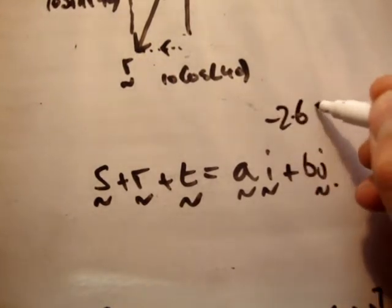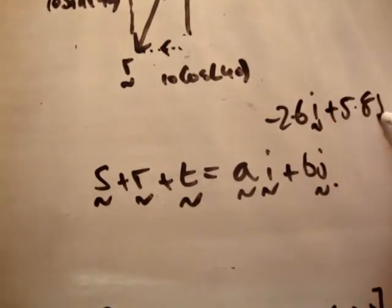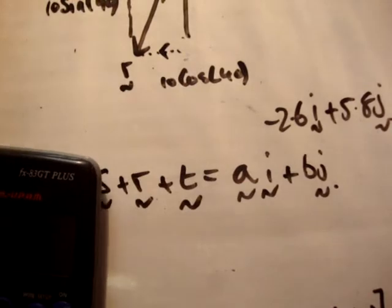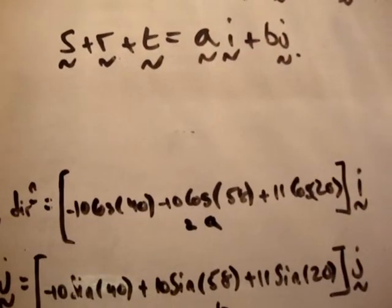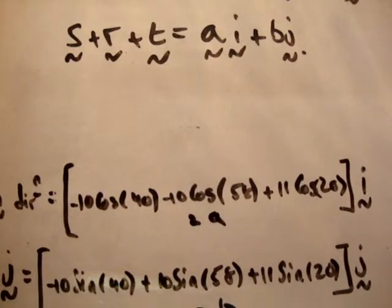So I'm just going to check to see if the book actually worked this out itself. So yeah, there's minus 2.6 i and 5.8 j. I'm just going to have a look at that in my calculator to see if we're correct. I'll just put that up there. I suggest you do this yourself as well. Just give me a moment. Minus 10 times the cos of 40 minus 10 times the cos of 58 plus 11 times the cos of 20. Yep, minus 2.6. So that's correct.